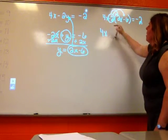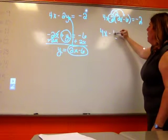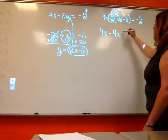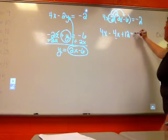So 4x, negative 2 times negative 2 gets me minus 4x, and then negative 2 times negative 6 gets me positive 12, equals negative 2.